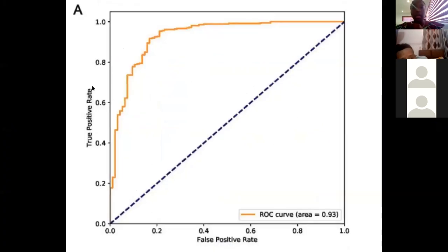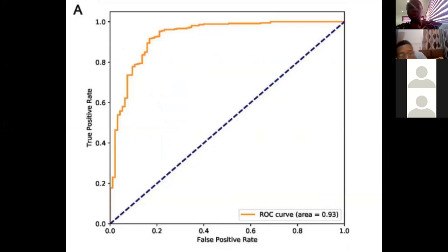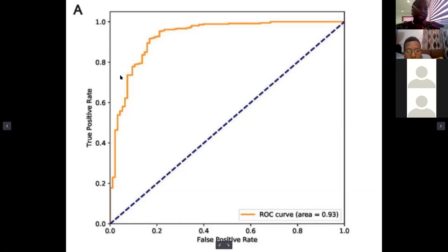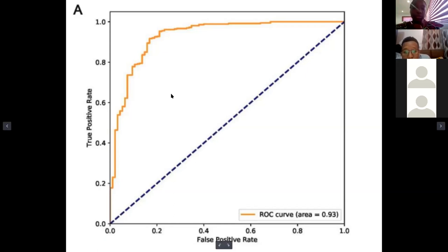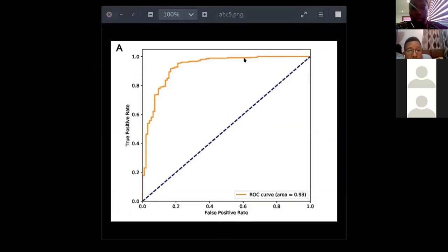Here is the AUC graph — Area Under the Curve — which for this model is 93%. On the vertical axis we have the true positive rate: this means the patient is actually sick and the algorithm correctly says they are sick. We need this area to be as high as possible for the algorithm to be reliable. That is what the AUC represents.